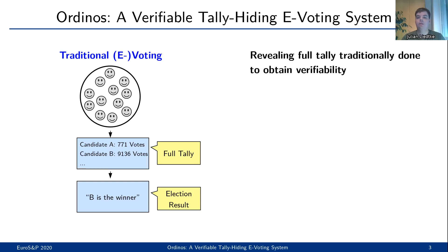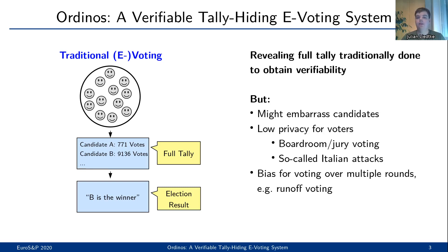In case of traditional voting, publishing the full tally is done in order to obtain verifiability. But revealing the full tally has several downsides. For example, in some elections like within companies, student associations, or in boardroom elections, it might be embarrassing for the losing candidate to publish the possibly low number of votes they received. Additionally, publishing the full tally lowers the privacy of the voters. Elections are often carried out among a small set of voters, like in boardroom or jury votings. Revealing the full tally in such a setting leads to a low level of privacy, because the vote of a single voter is only hidden behind a low number of other votes.